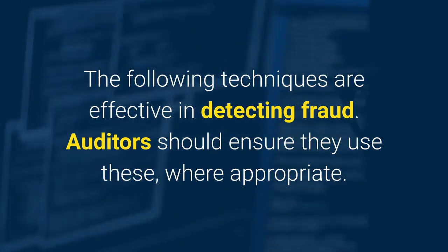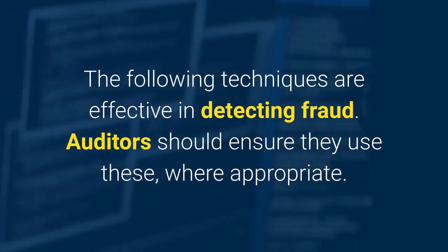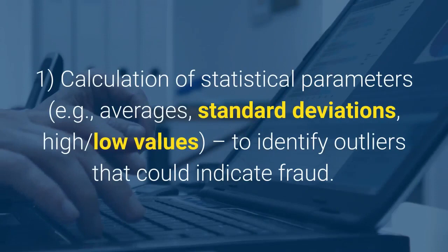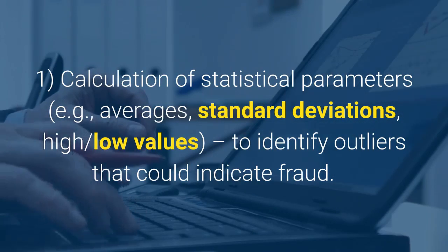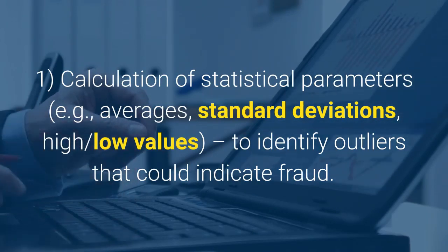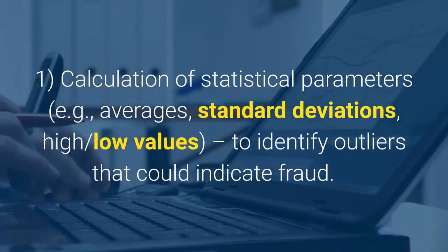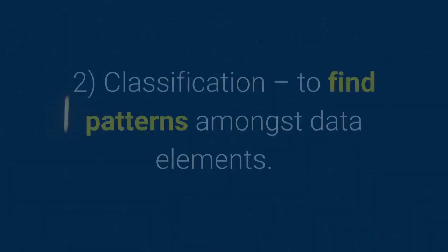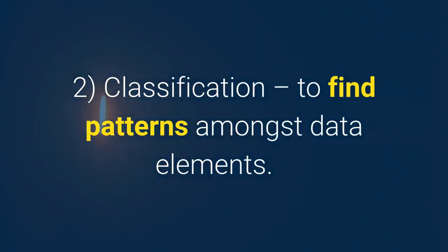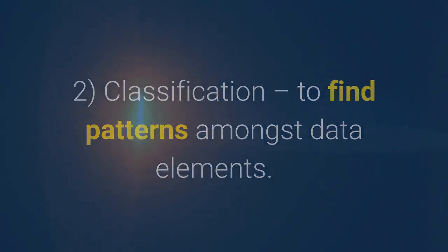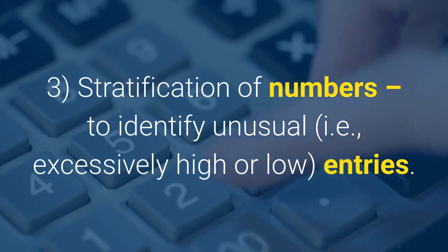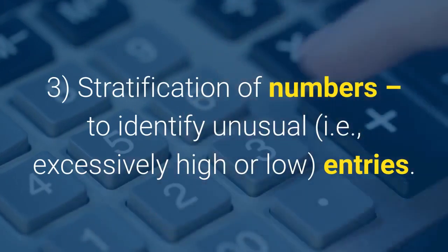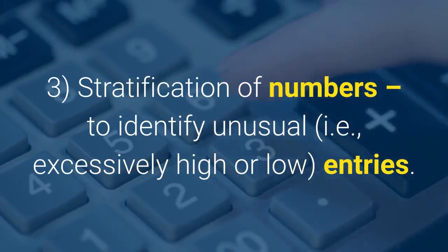Auditors should ensure they use these where appropriate. One: calculation of statistical parameters, e.g. averages, standard deviations, high and low values, to identify outliers that could indicate fraud. Two: classification to find patterns amongst data elements. Three: stratification of numbers to identify unusual, i.e. excessively high or low entries.